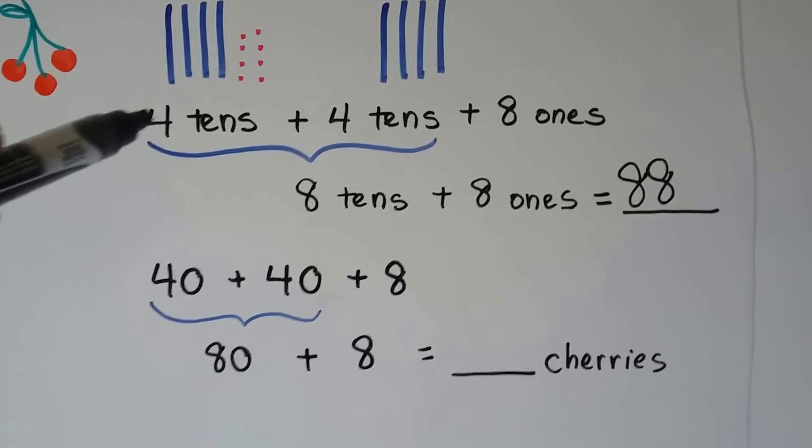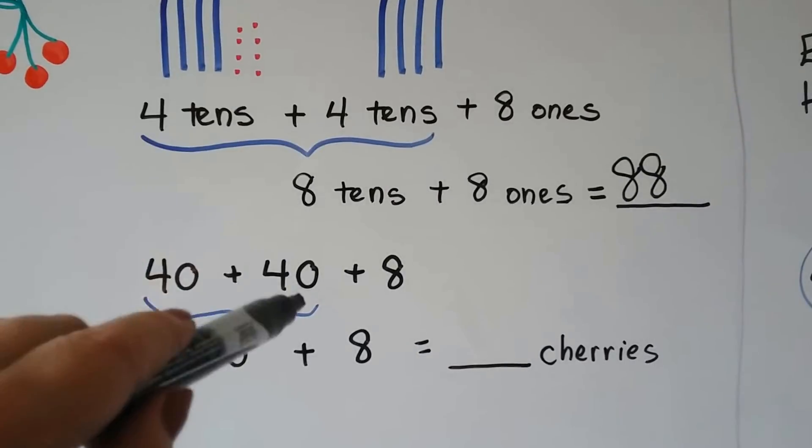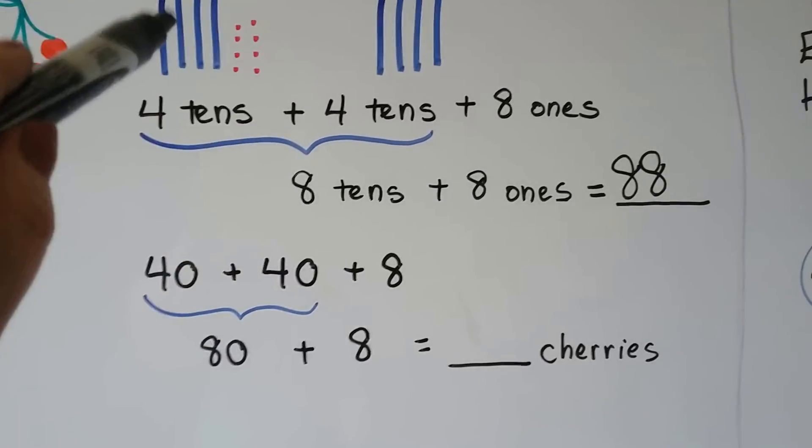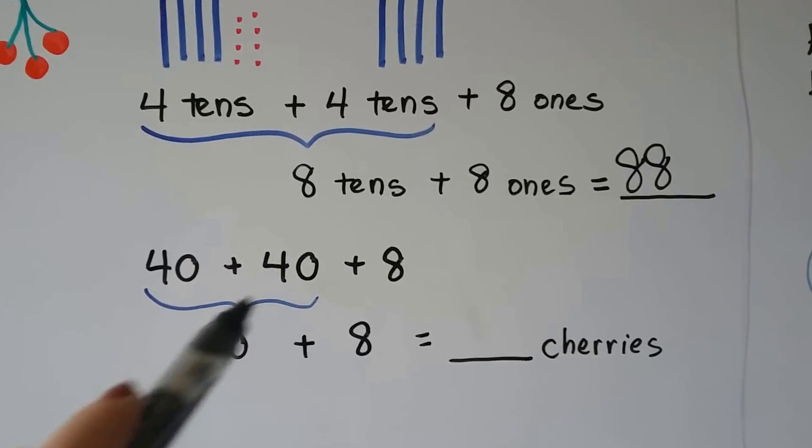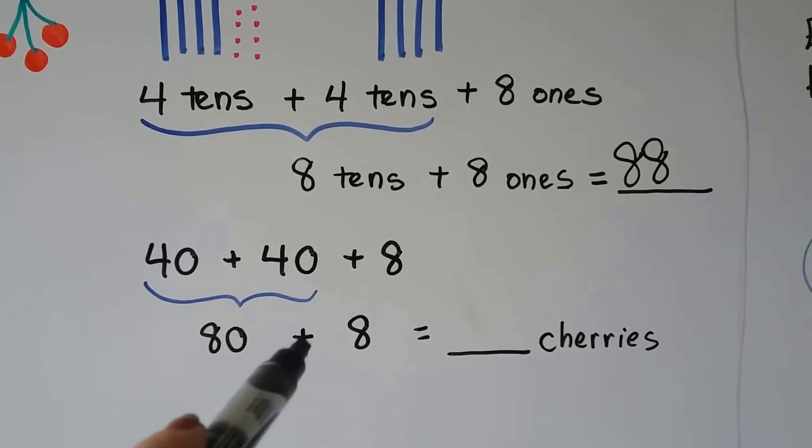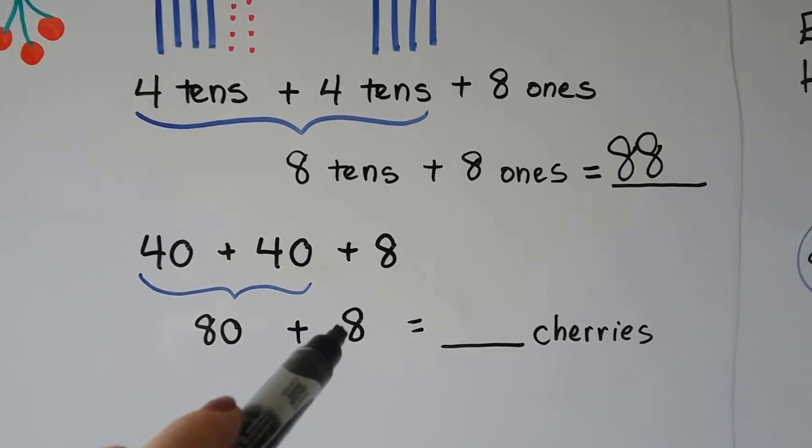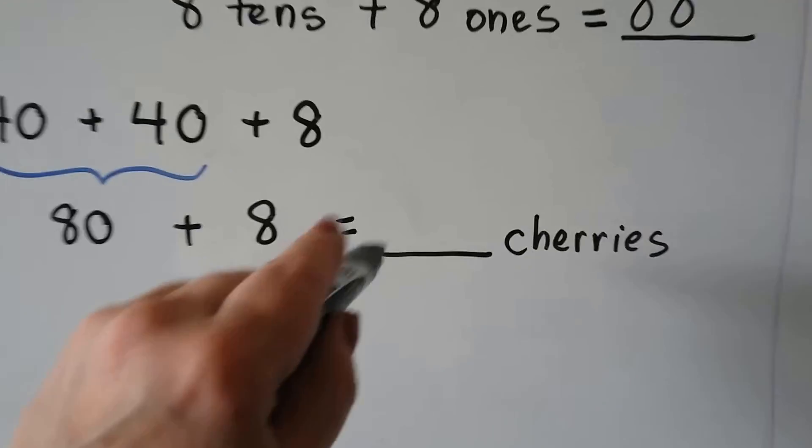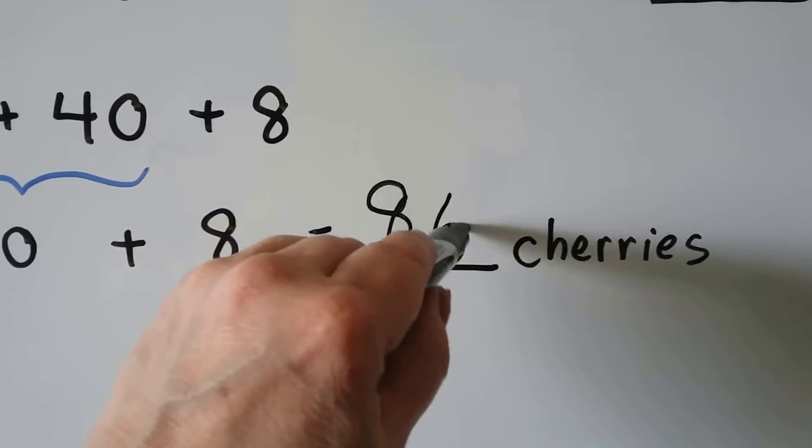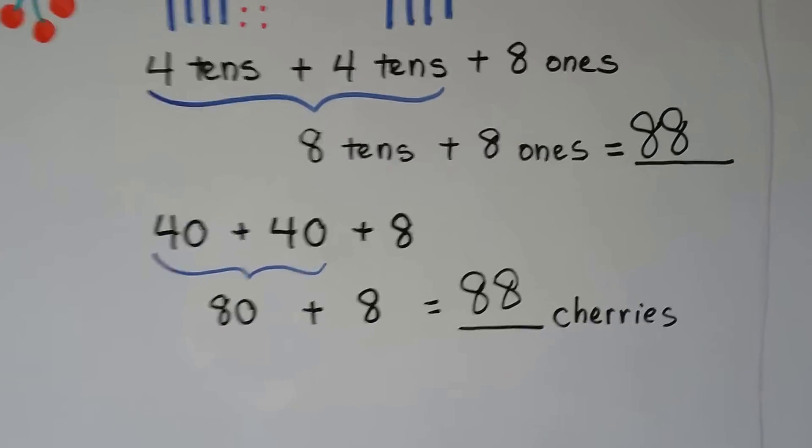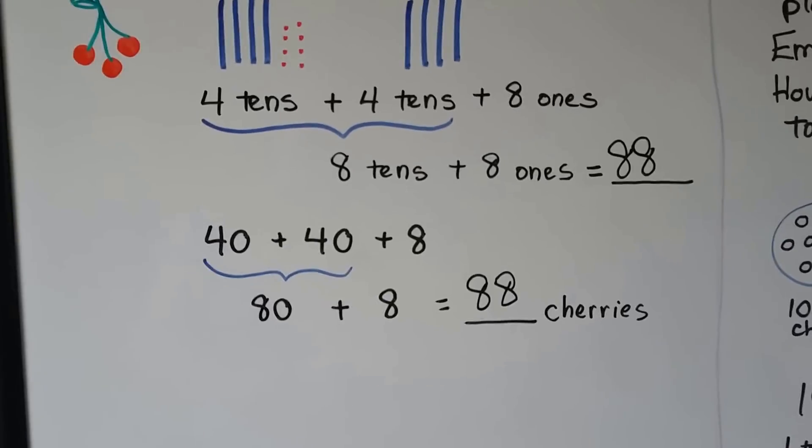We can also look at it as 40 plus 40 by adding the tens. That's equal to 80. And then add the 8 little ones. And that would be 88. Doesn't matter what order we add them in. We'll get the same amount. 88 cherries.